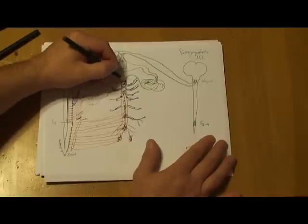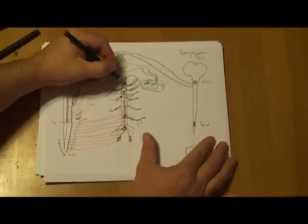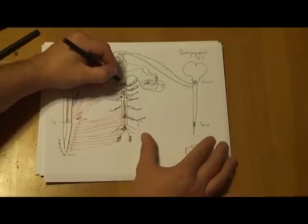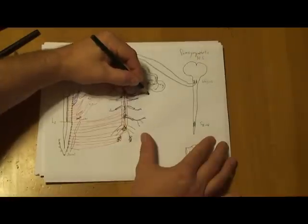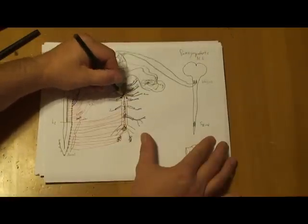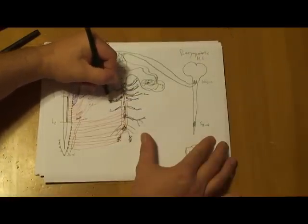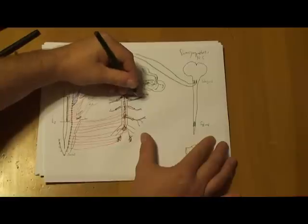The vagus nerve innervates all the branches of the celiac artery, all the organs supplied by the celiac plexus. Likewise, all the branches of the superior mesenteric plexus, and on down through the aortico-renal as well.